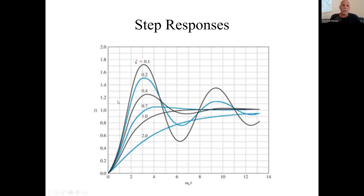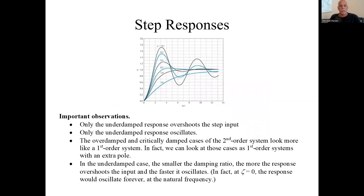In fact, if zeta were zero, you'd have eternal oscillation. Only the underdamped case will overshoot and oscillate. Overdamped and critically damped look kind of like a first-order system — we can look at those cases as first-order systems with an extra pole, which we'll get into later in the course.